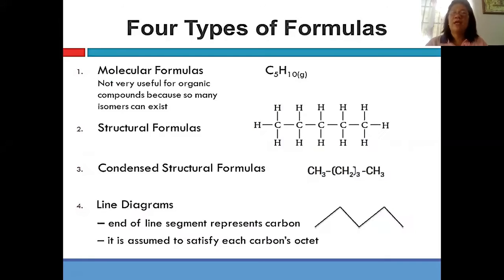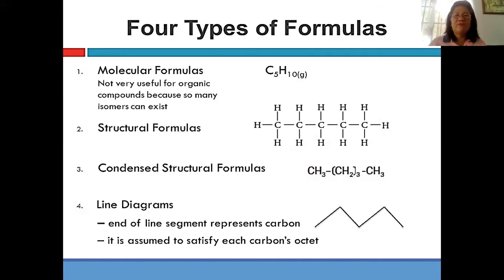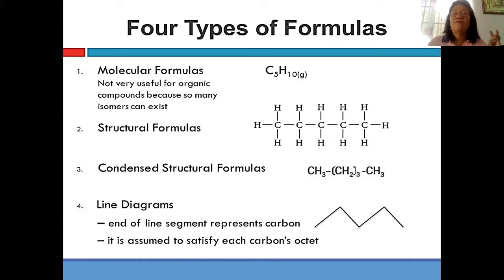As I have said, we have four types of formulas in organic chemistry. This is just a review. If you talk about molecular formula, this is the exact formula. For instance, if what is in your formula are only carbon and hydrogen, then what will be in the formula are the number of atoms of carbon and number of atoms of hydrogen.